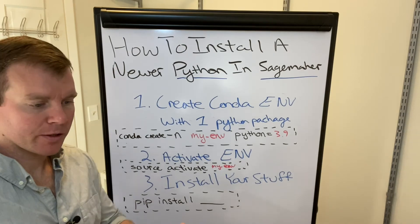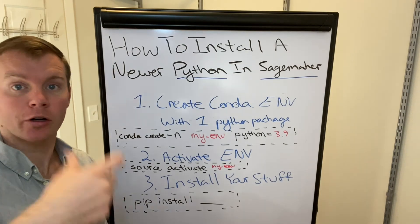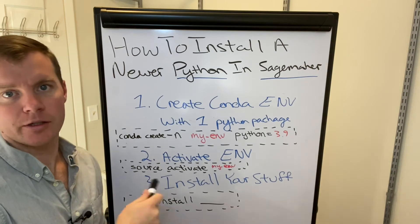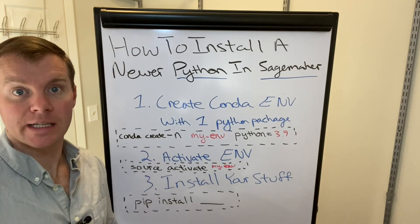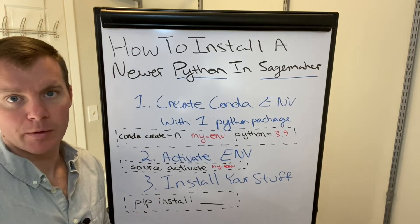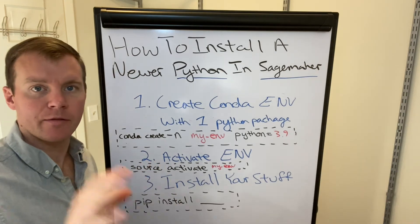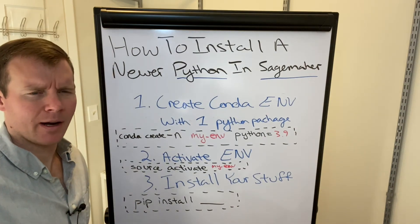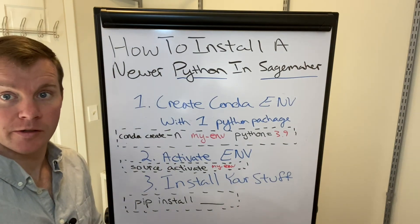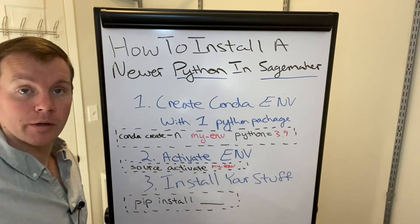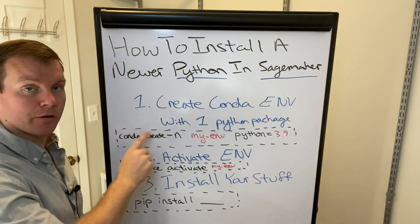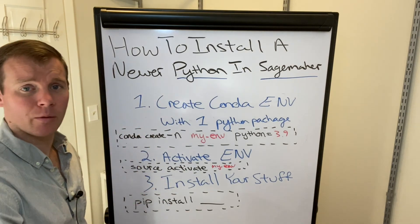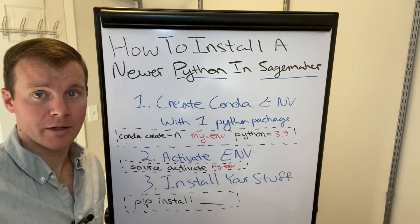This will give us a one-time environment available as a Jupyter kernel that we can then use with our notebooks. There are other strategies for persisting this for repeat sessions. But just for quick and dirty — if you're a SageMaker user and you want to use Python 3.8 or 3.9 and you think SageMaker doesn't support it — no, it totally does. Just use Conda to create your environment, and then you can pip install whatever you want after that, so you can get your work done.